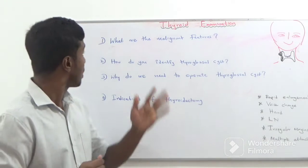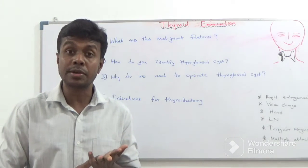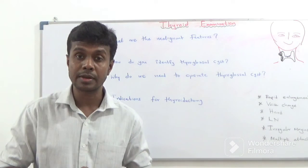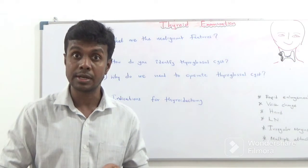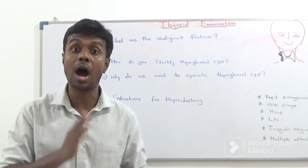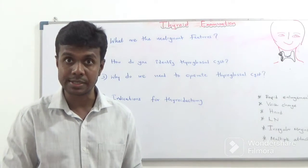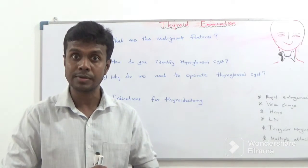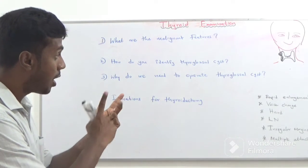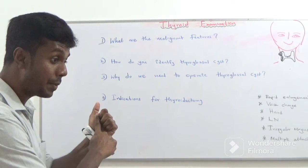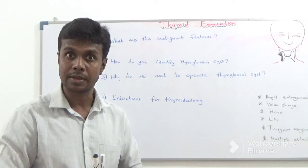What are the malignant features? Recent rapid enlargement of the lump, voice change, cervical lymph nodes, hard consistency, and multiple attachments with irregular margins — those are the features of thyroid malignancy.